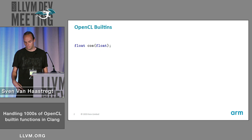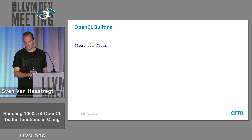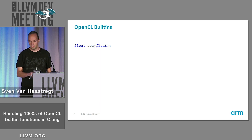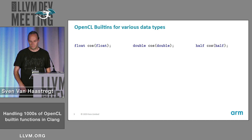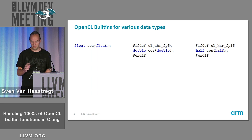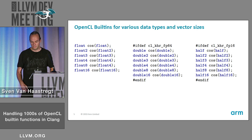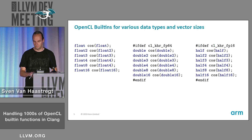Here's an example of a cosine built-in function. It's defined for float, taking a float argument and returning a float as well. It's also defined for double types and half types. These half and double types are partial extensions, so they need to be guarded by hash-ifdef-defines. And then we also have all the vector overloads of all the different data types. You can see how this quickly explodes — we have a lot of overloads already.